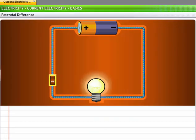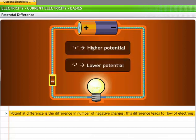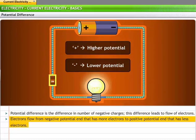Electric current is a result of potential difference across two points in a conductor. Potential difference is the difference in number of negative charges that leads to flow of electrons. Electrons flow from negative potential, that is, the point with more electrons to positive potential, that is, the point with less electrons.